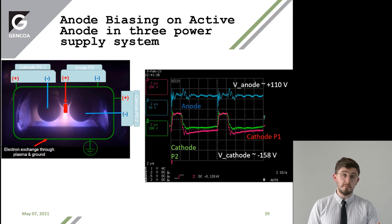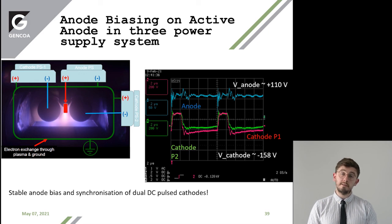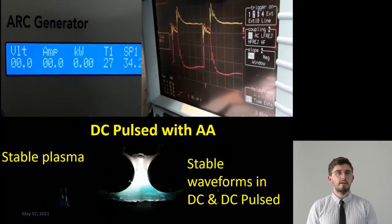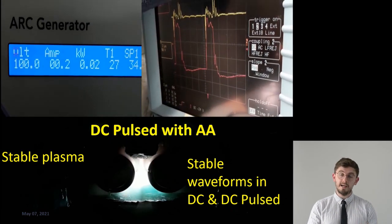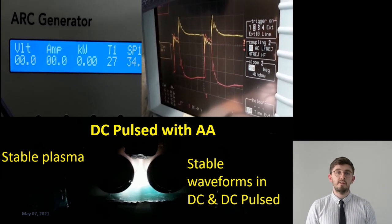We demonstrated that we can get a stable anode bias, and through synchronization of two cathodes with two DC pulsed power systems, we can do this stably. Now I can show you a quick video to help you visualize this — in the top left is the external bias power supply on the anode, going from 0 to 100 volts.